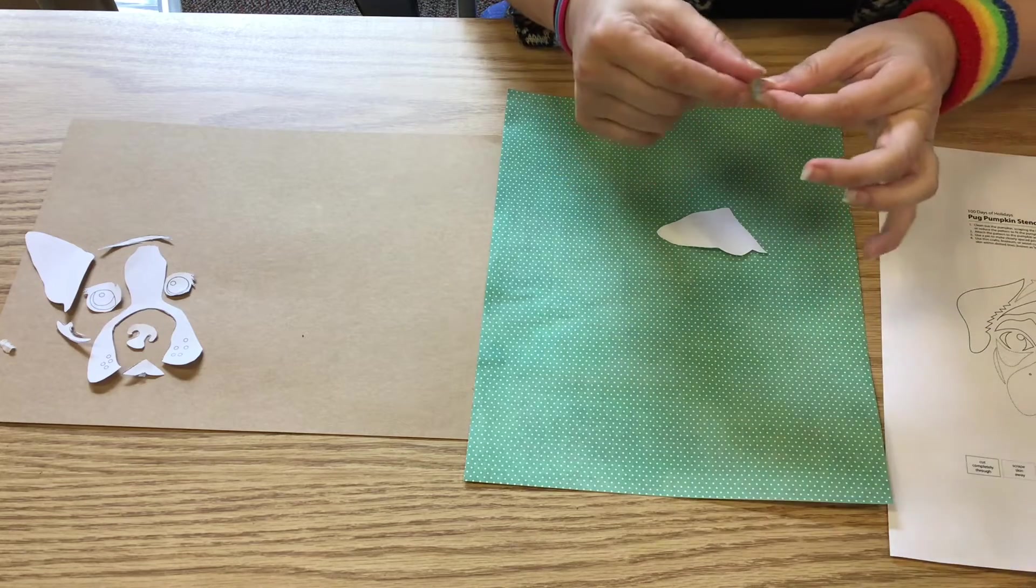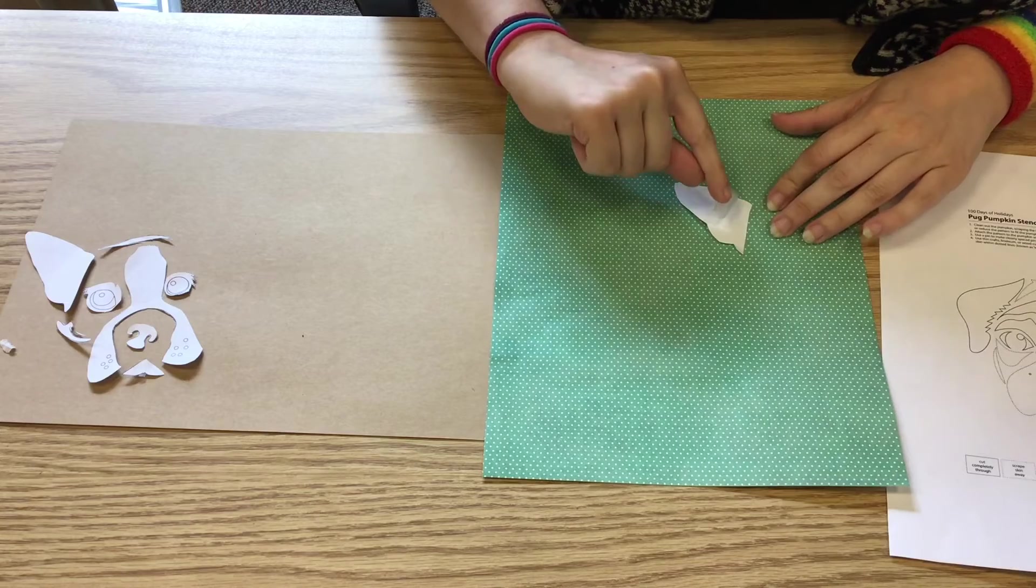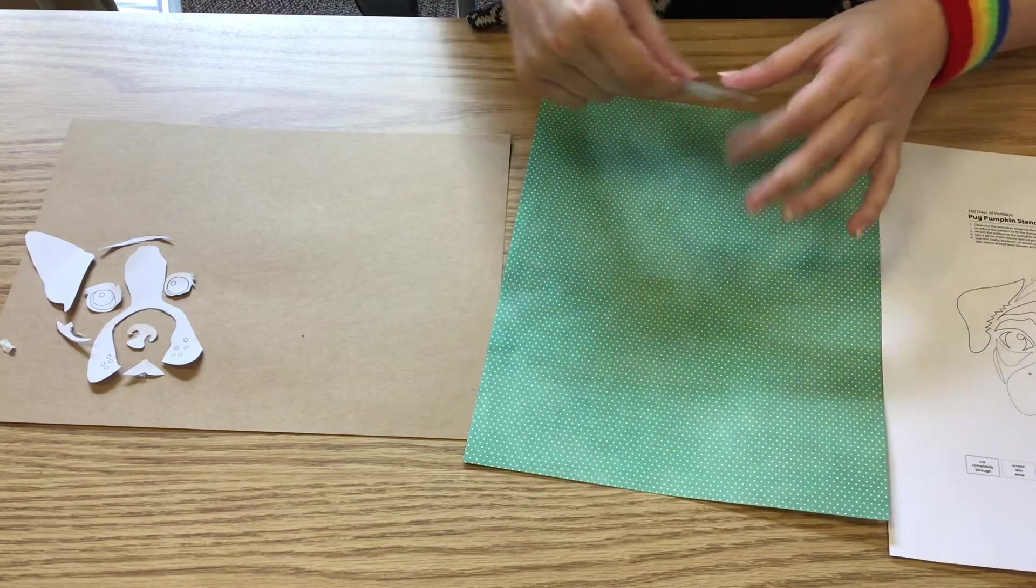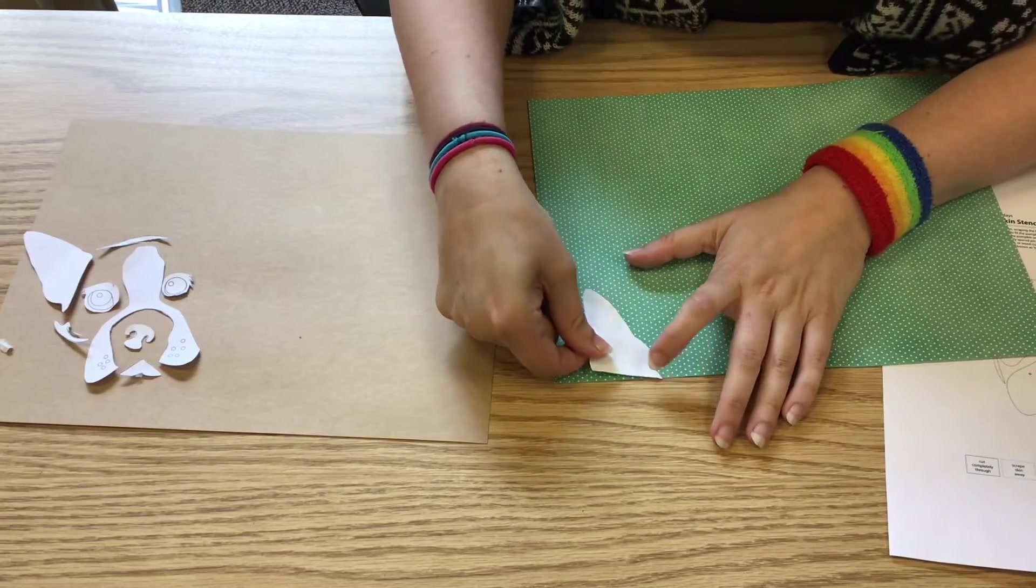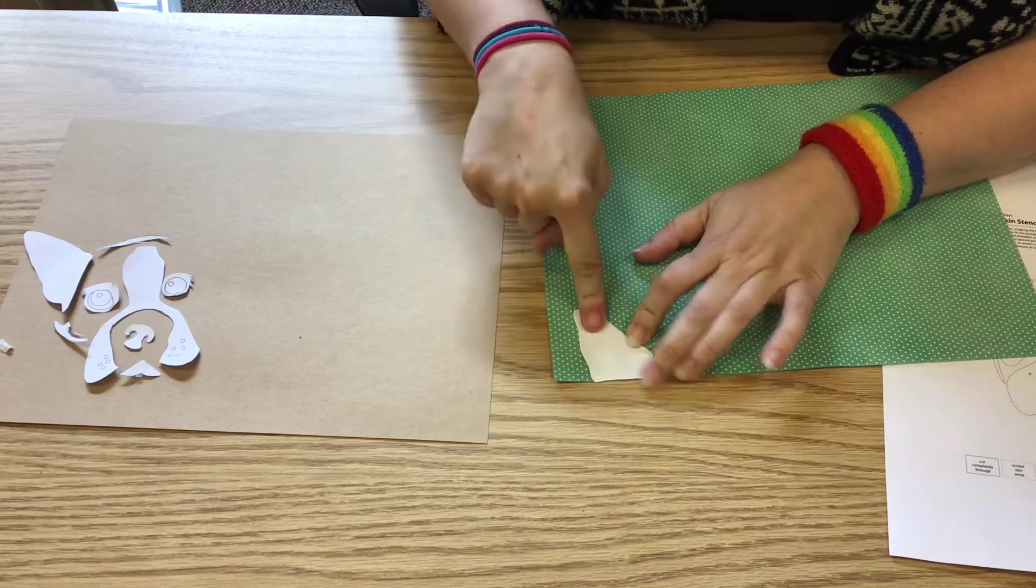Roll it over so it's sticky on both sides and just stick it on the back of your piece.